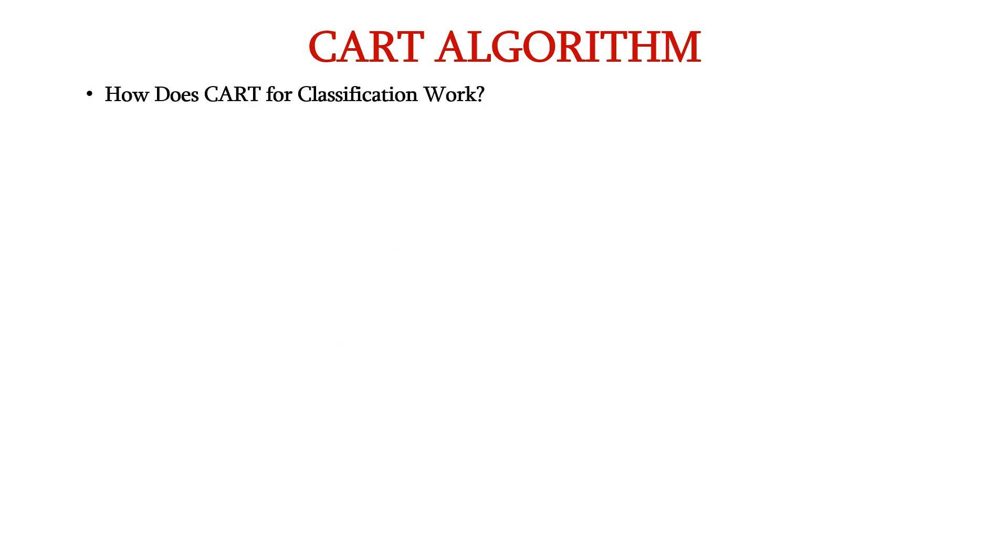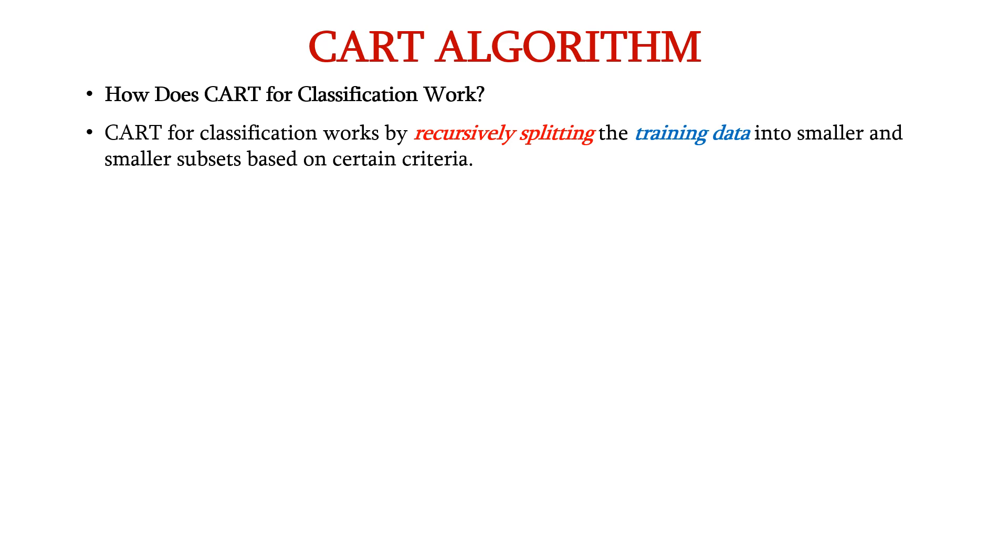Now, let us see how CART for classification works. CART for classification works by recursively splitting the training data into smaller and smaller subsets based on certain criteria. The goal is to split the data in a way that minimizes the impurity within each subset.